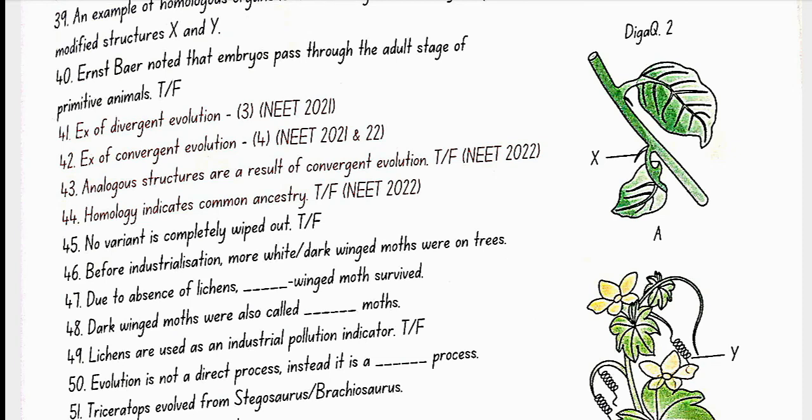Example of convergent evolution are wings of butterfly and of birds. Second example is eyes of octopus and that of mammals. Third is flippers of penguins and dolphins. Fourth example is sweet potato which is a root modification and potato which is a stem modification. Analogous structures are a result of convergent evolution. Yes, true. Homology indicates common ancestry. Yes, true. No variant is completely wiped out. Yes, true.